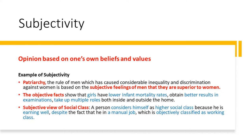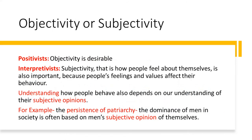We also have the subjective view of social class — in other words, how people feel about themselves. A person may consider himself or herself as higher social class because he or she is earning well, despite the fact that one is in a manual job, which is objectively classified as working class. In other words, you are trying to see how people feel about themselves rather than what they might be objectively, according to the criteria for classification used by sociologists. So we have to consider sometimes both the objective view and the subjective view.